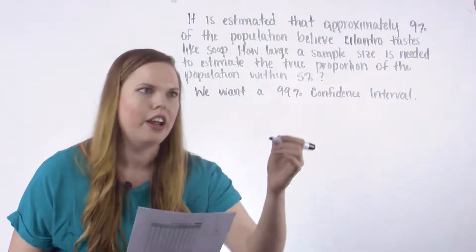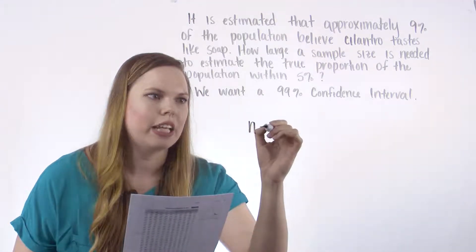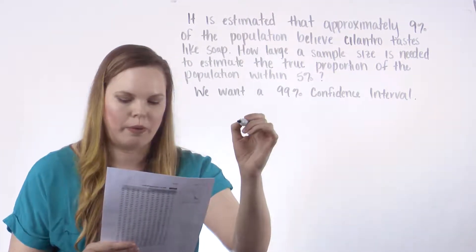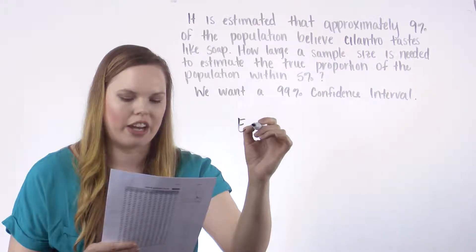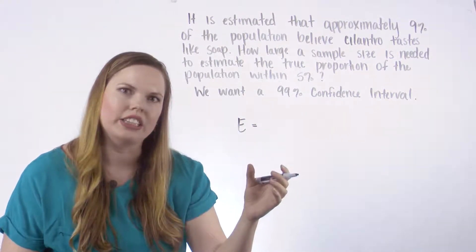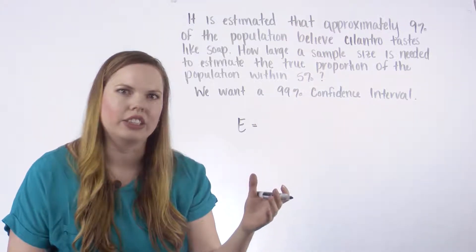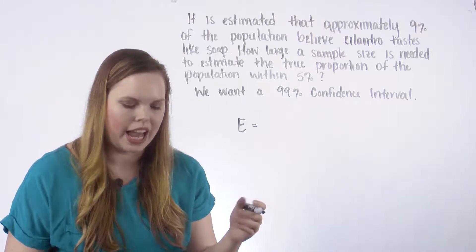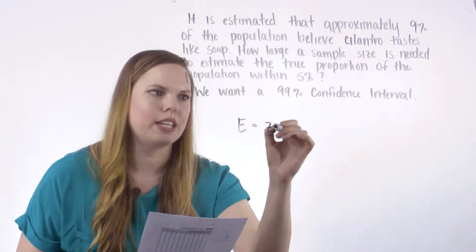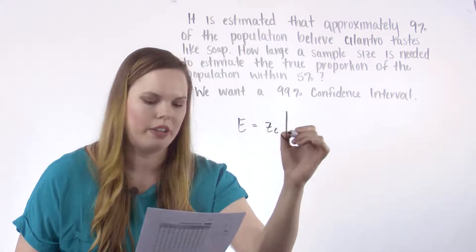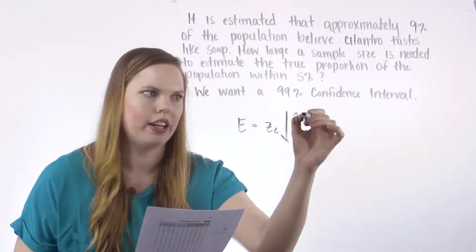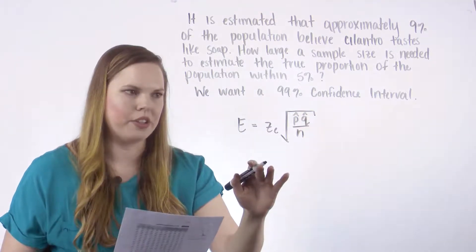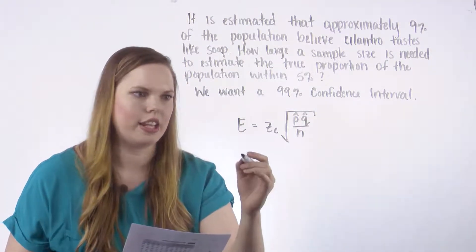So let me get the formula up here for our minimal sample size needed for our proportion. We know that the margin of error for our proportion is just that part of the confidence interval that you add and subtract to the point estimate, the p hat, and it's z sub c times the square root of p hat times q hat divided by n. Do some algebra, solve for n, the sample size.